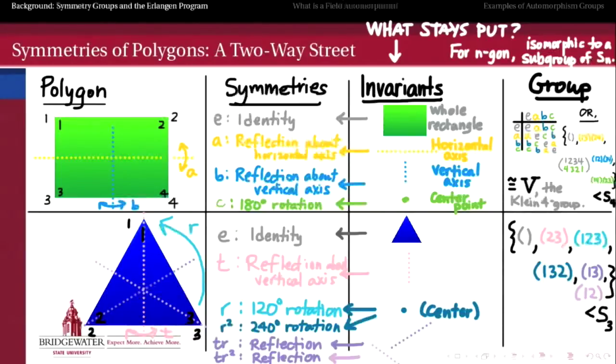So that subgroup of S3, to which the symmetry group of this triangle is isomorphic, will have six elements. But since S3 itself has six elements, that must mean that this symmetry group itself is isomorphic to S3, the full symmetric group on three symbols.